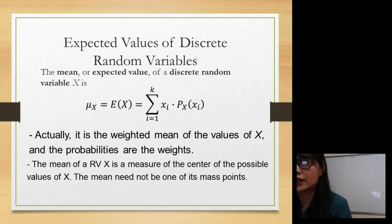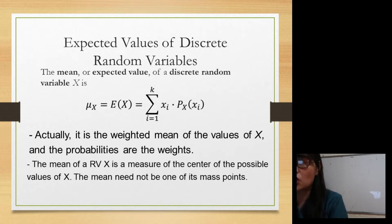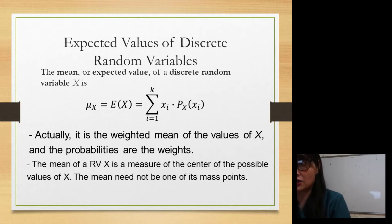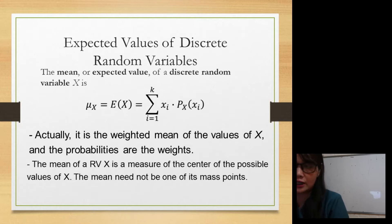It is the weighted mean of the values of a random variable x, and the probabilities are the weights. The mean of a random variable x is a measure of the center of the possible values of that random variable x. The mean need not be one of its mass points.